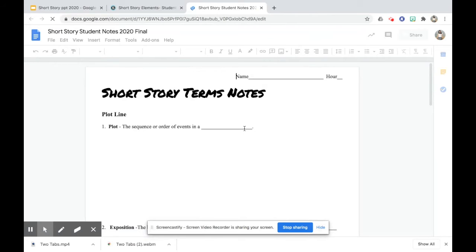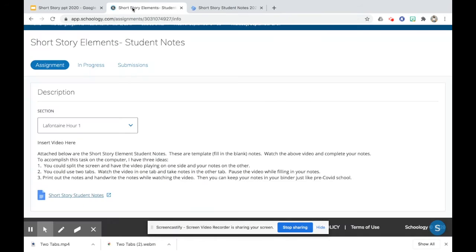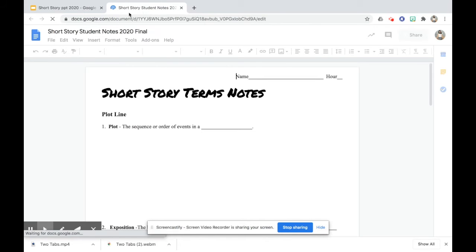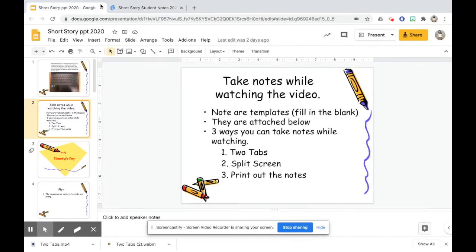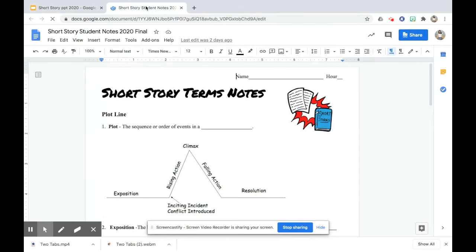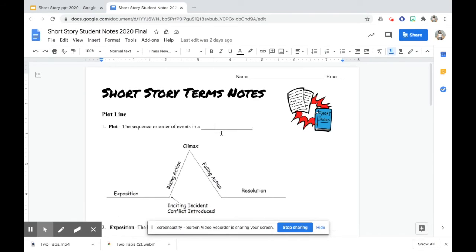Now you have your notes in one tab and you can have the video running in the other tab. You can click out of the Schoology one so that you have just two tabs open, one for the video, one for the notes. Then you can click back and forth, watch the video, pause it when needed, and come back to your notes and type your notes in the spaces provided. And that is how you take notes in two tabs.